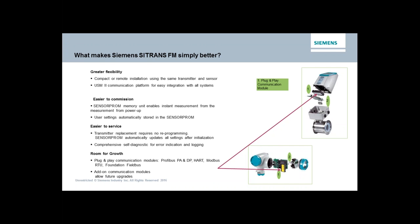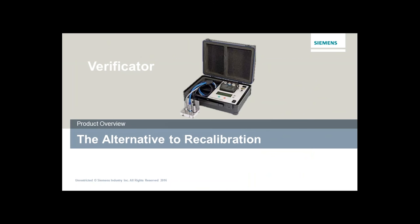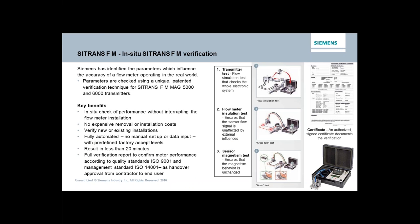The last thing I want to touch on is verification capability — the ability without removing the meter from the process line to confirm the performance of the sensor by reading the sensor prom and measuring how the sensor itself is operating. We check the transmitter for full functionality and also check the interconnecting cable between the two, so at the end of the day you know exactly how your instrument is operating without the need to pull it out of the pipeline or even shut down the process. It's a very flexible design that works with our MAG 5000 and 6000 transmitters.